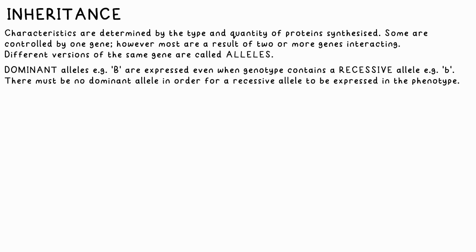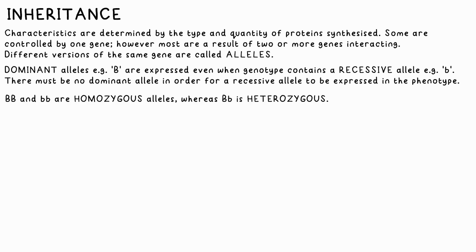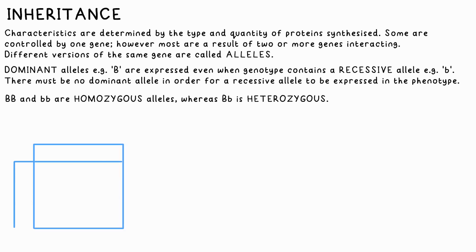So having blue eyes, I must have the gene little b, little b. Big B, Big B or little b, little b are homozygous genes, as they only have one type of allele, whereas Big B, little b is heterozygous. We can use a Punnett square to predict the probability of a certain phenotype.